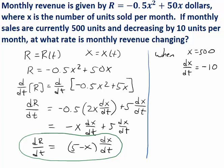If we plug that in here, we get the rate at which revenue is changing is (50 minus 500) times negative 10. That's going to come out to four thousand nine hundred fifty.